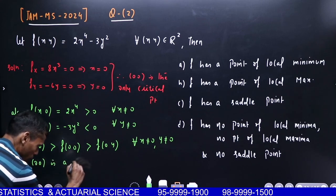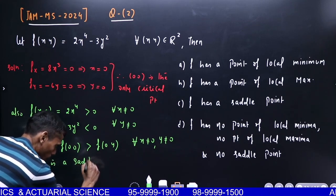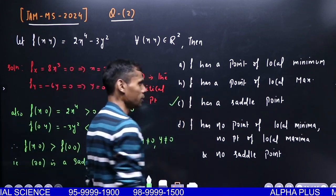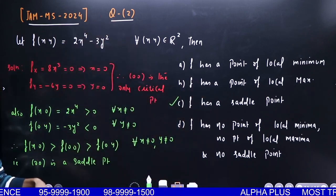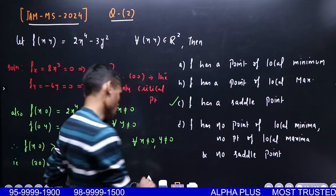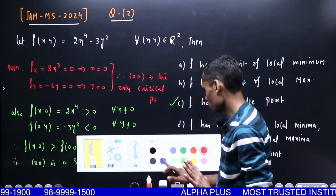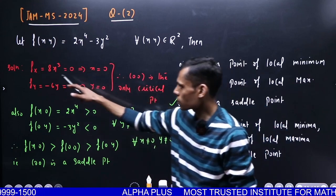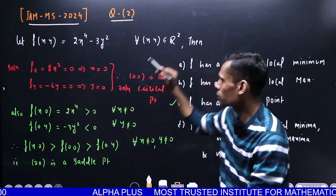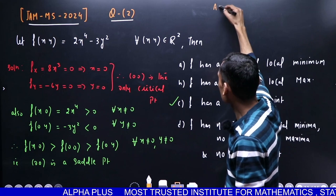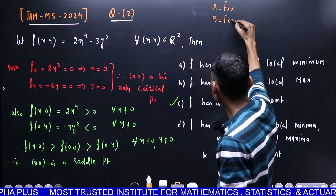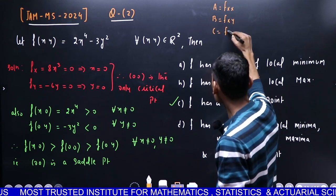So in this question, your C part is correct. Now this is a single correct question, so we don't need to check the other options. Let me show you what you typically do in exams. After finding partial derivatives, you compute AC minus B² where A is f_xx, B is f_xy, and C is f_yy.